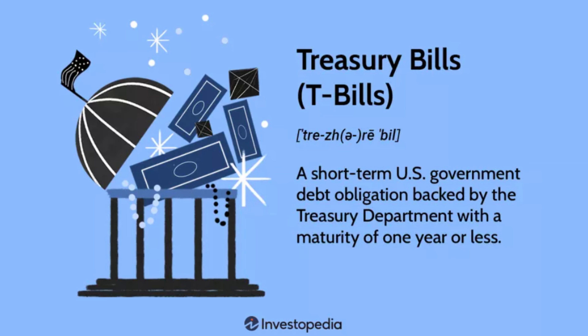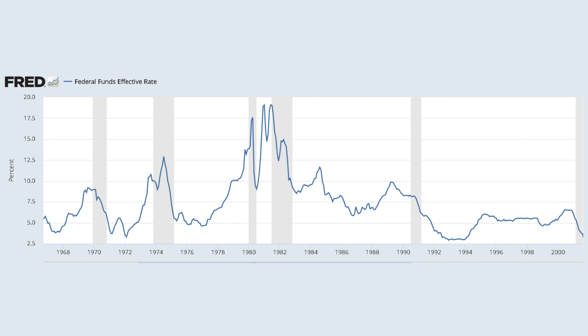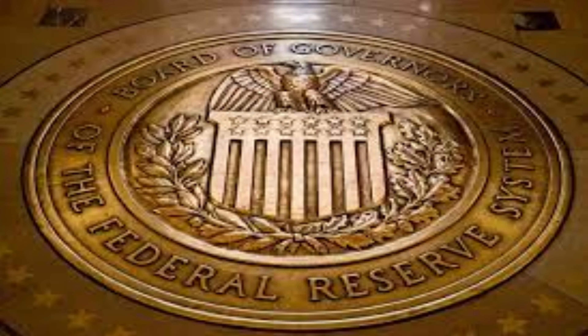The 3-month treasury bond, commonly referred to as the risk-free rate, is the yield you can get for taking on no risk, and is considered the benchmark or minimum rate of return for investors. It is more or less controlled by central banks such as the Fed in the USA when they adjust the Fed funds rate.